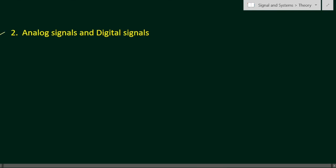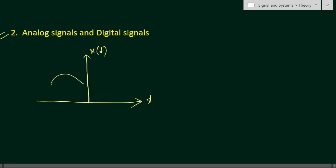In the second classification, we have analog signals and digital signals. For an analog signal x(t), the signal can take any value — it is not restricted to fixed or specific values. The curve can take any value in its range. This type of signal is called an analog signal.